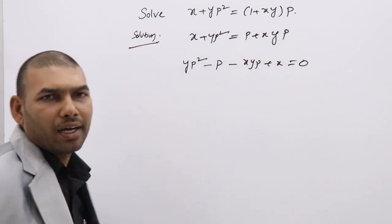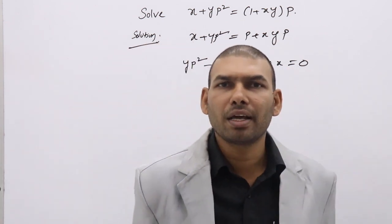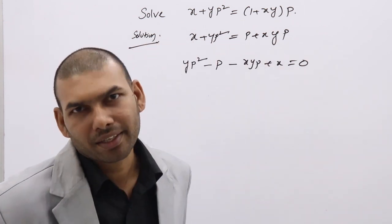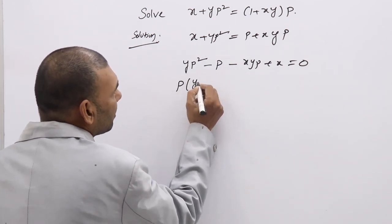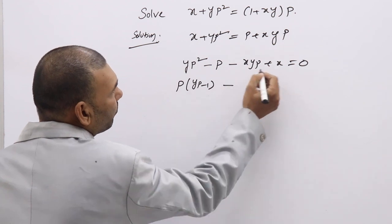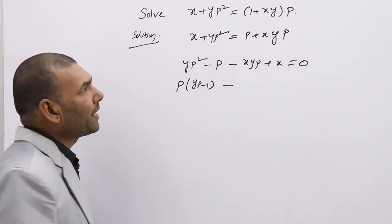We are rearranging given differential equation like that. Now if you observe, from these two terms you can take p common, right? yp minus 1.